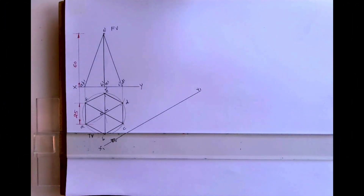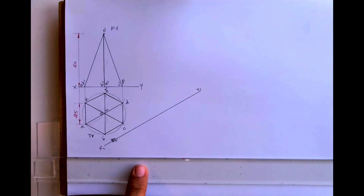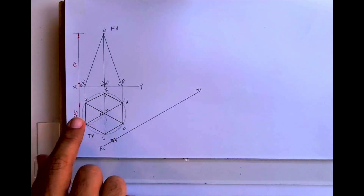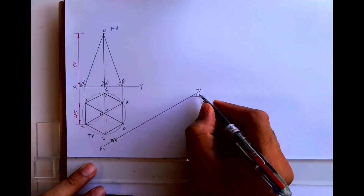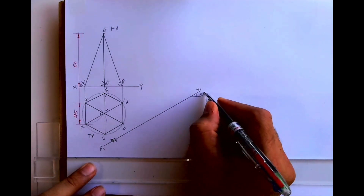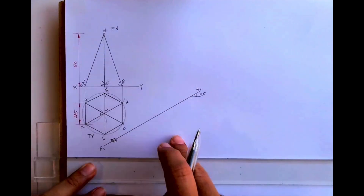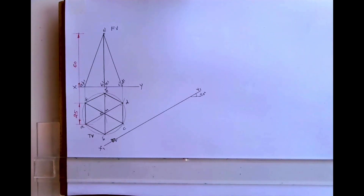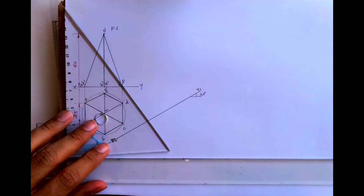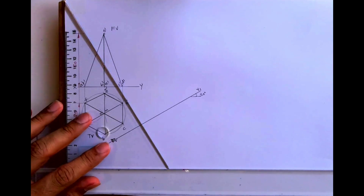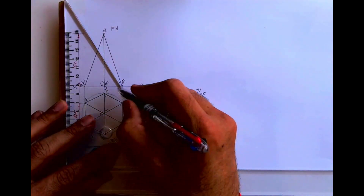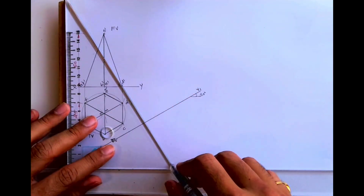Welcome to technical drawing. Today we are going to draw this — we have a front view and top view, and we are going to draw the auxiliary top view. This line is inclined at 30 degrees, so we'll draw this at 60 degrees. Take lines at 60 degrees from C-dash, D-dash.